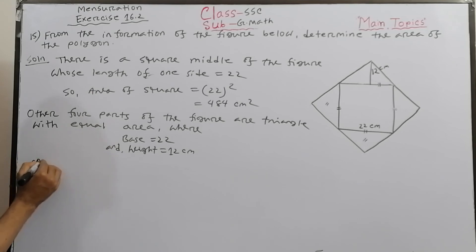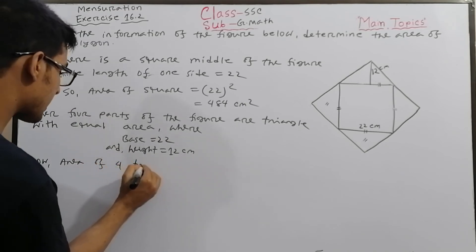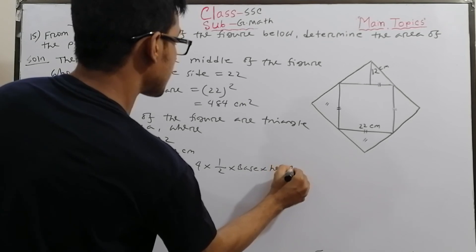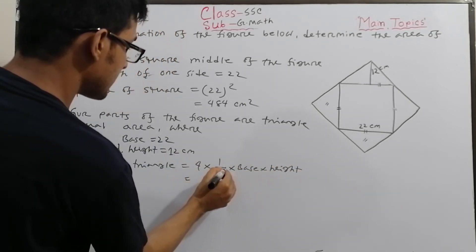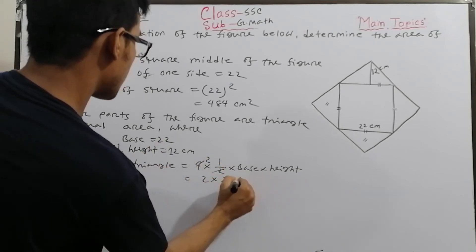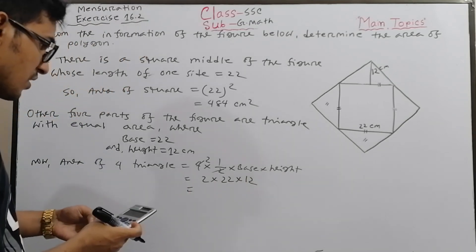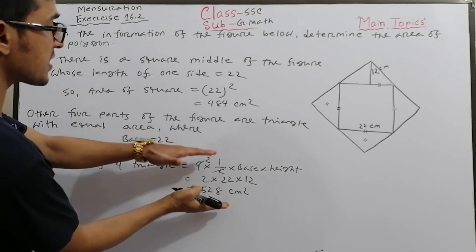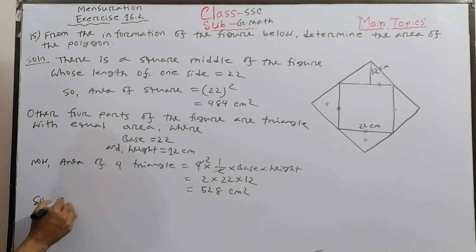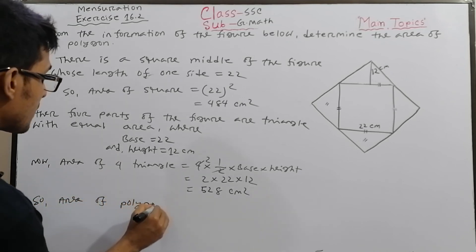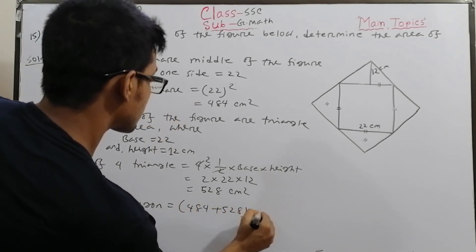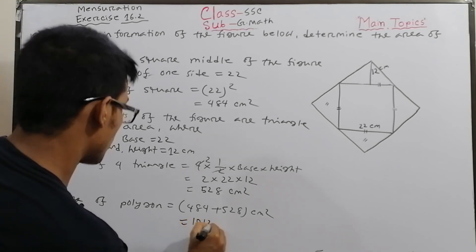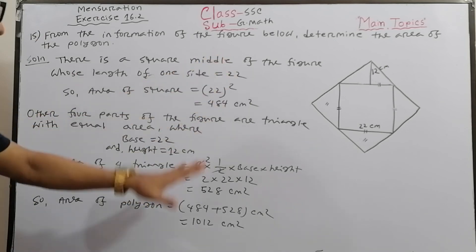Area of four triangles equals 4 into half into base into height equals 2 into 22 into 12 equals 528 square centimeters. Area of polygon equals 484 plus 528 equals 1012 square centimeters. That completes question 15. Thank you so much.